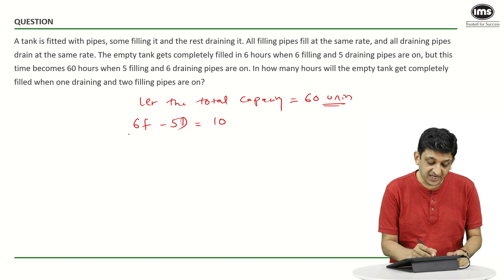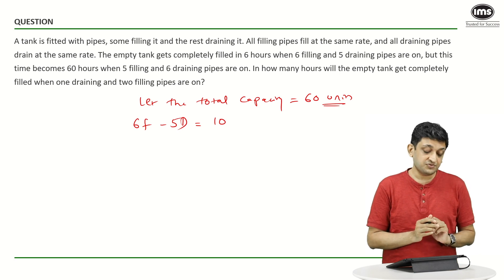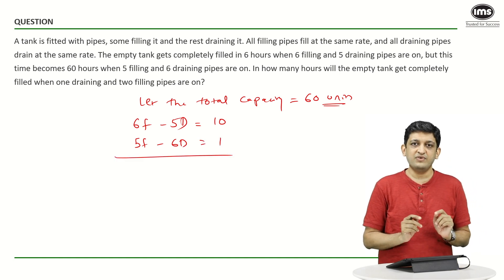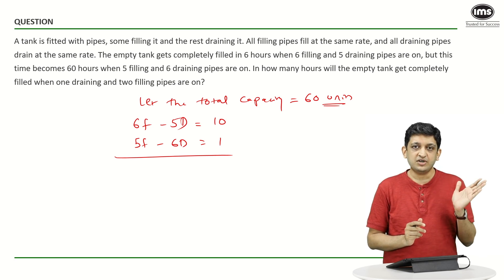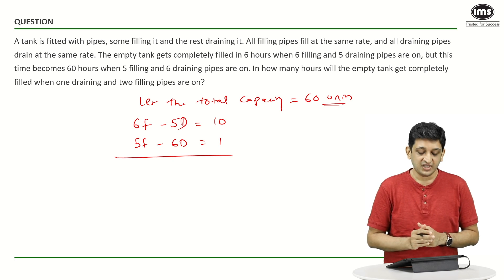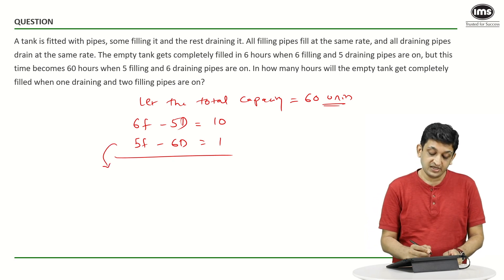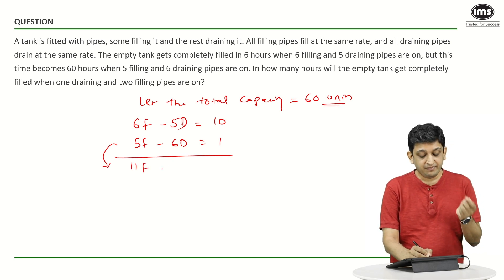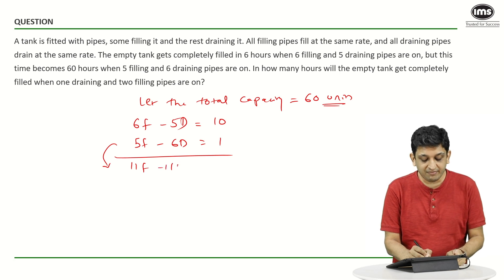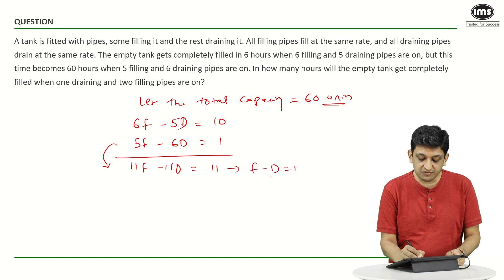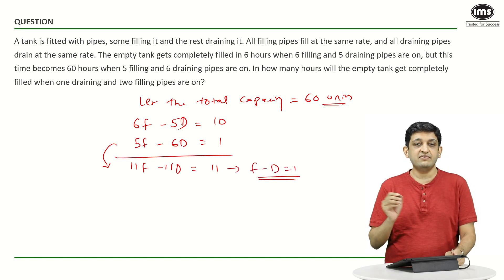In the second case, if you look at it, we have 60 hours in which this work is being done. So, we have 5 filling minus 6 draining equals 1 unit. Now, if you look at the numbers, the numbers look very good because if you add these two, you are going to get all 11s. If you subtract, you are going to get a nice F plus D kind of an equation. So, let us add these two equations and see what happens. 6F plus 5F is going to be 11F minus 5D plus minus 6D is going to be minus 11D and 10 plus 1 is 11. So, we are going to get F minus D equals 1, if you cancel out an 11 from all the 3 terms.